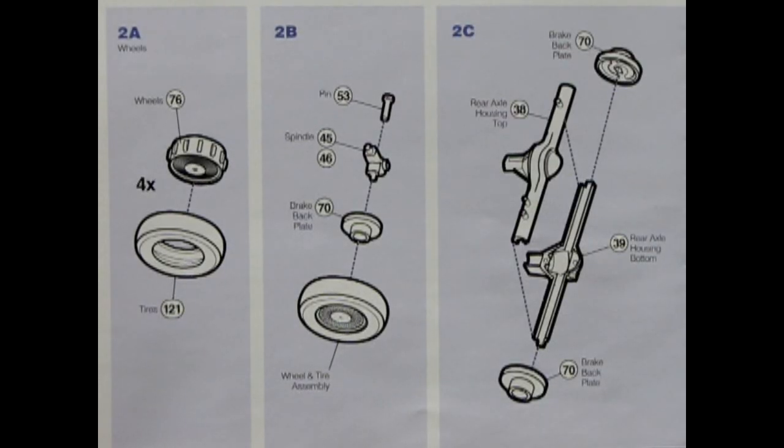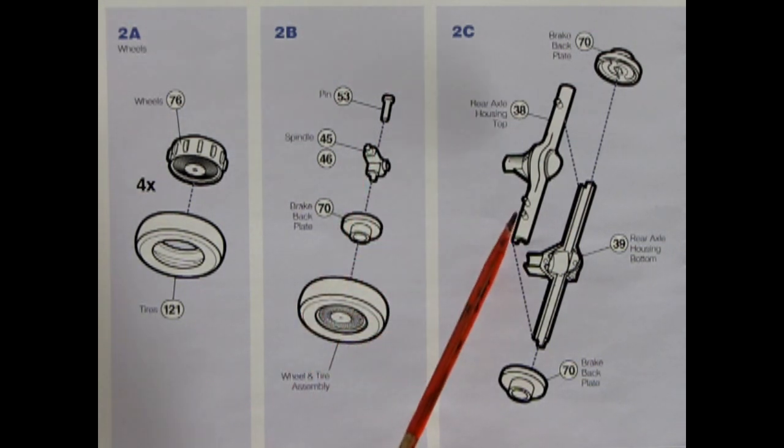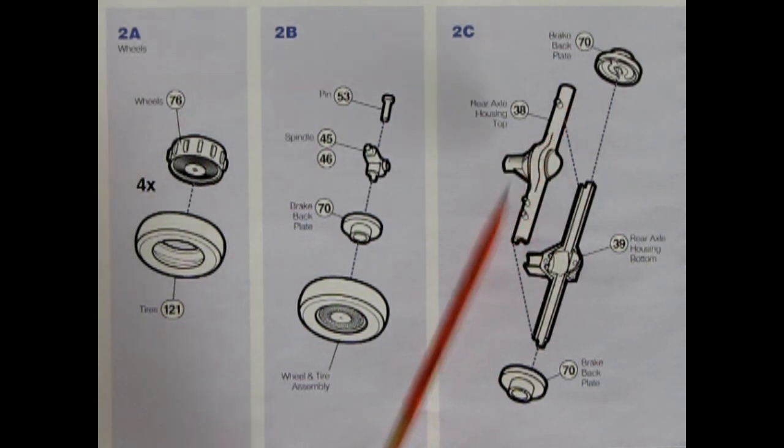Assembly step number two shows our wheels and axle going together. First we have this wheel hubcap arrangement which goes into our single tire and you want to repeat that four times. Then you've got your wheel assembly going on to this brake backing plate as well as our spindle and it's all held together with this little pin. For the rear axle we have our differential in two pieces going together as well as these brake backing plates.